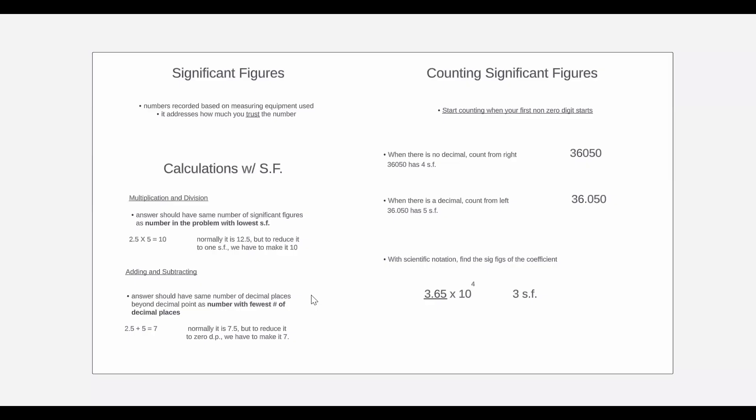Now for adding and subtracting, the answer should have the same number of decimal places beyond the decimal point as the number with the fewest number of decimal places. So for example, we have 2.5 plus 5 is equal to 7. Now we all know that 2.5 plus 5 is 7.5, but since this 5 has zero decimal places, it has a sig fig of 1, meaning the answer should also have one sig fig that would make it 7.